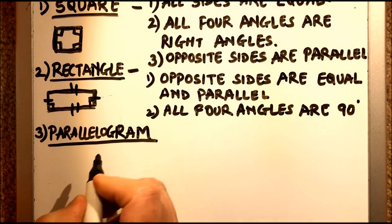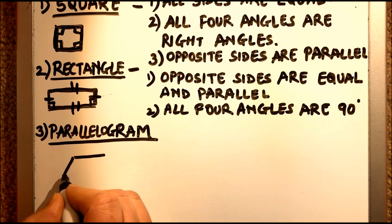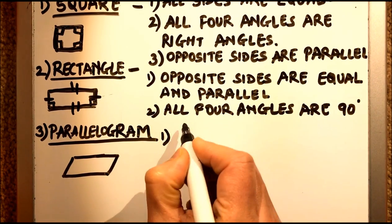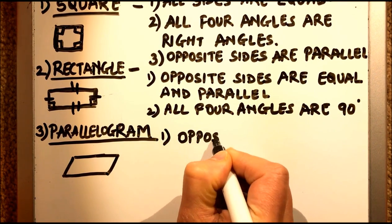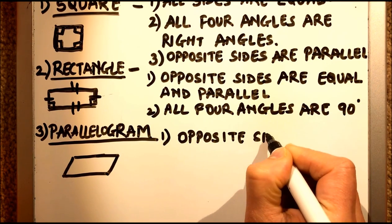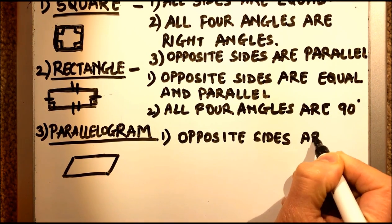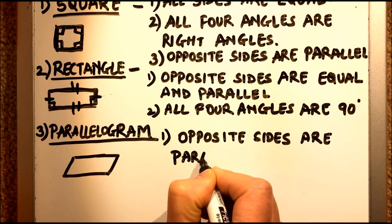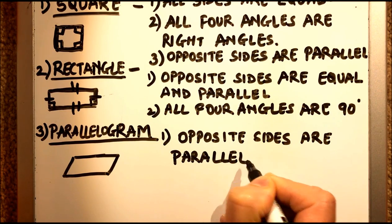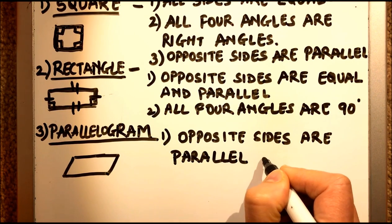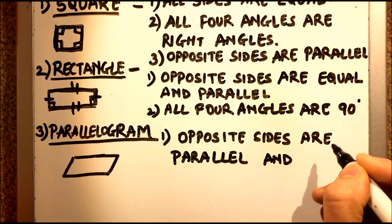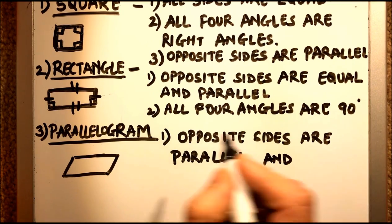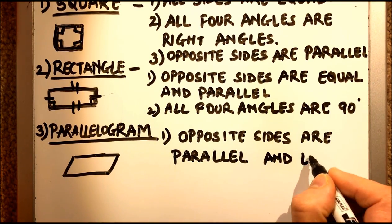Next comes the parallelogram. A parallelogram is a figure in which opposite sides are parallel and equal. The difference between a parallelogram and a rectangle is that in a rectangle the angles are 90 degrees, whereas in a parallelogram the angles are not 90 degrees — the sides are not perpendicular, they are equal and parallel.